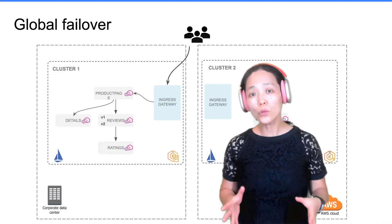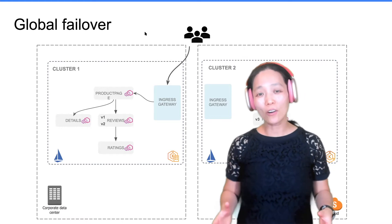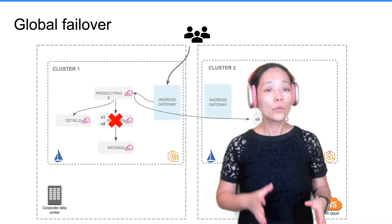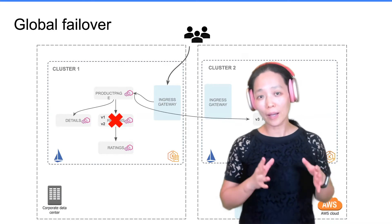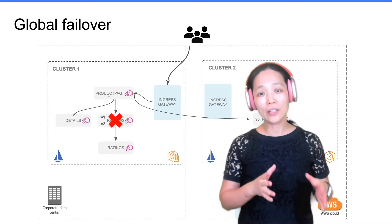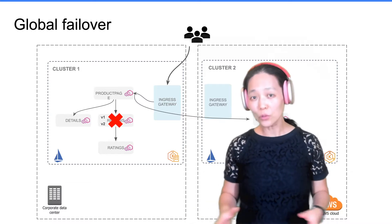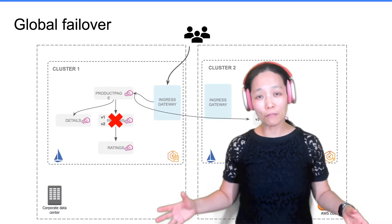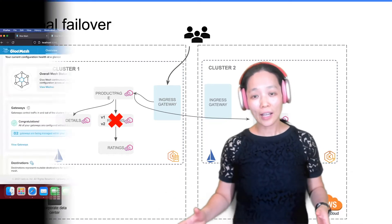We are going to make it interesting by triggering a failover scenario. In this failover scenario, we are going to put reviews version 1 and 2 in the first cluster to sleep, so they are not available. Then we are going to use Istio and GlowMesh to successfully fail over the services to cluster 2.